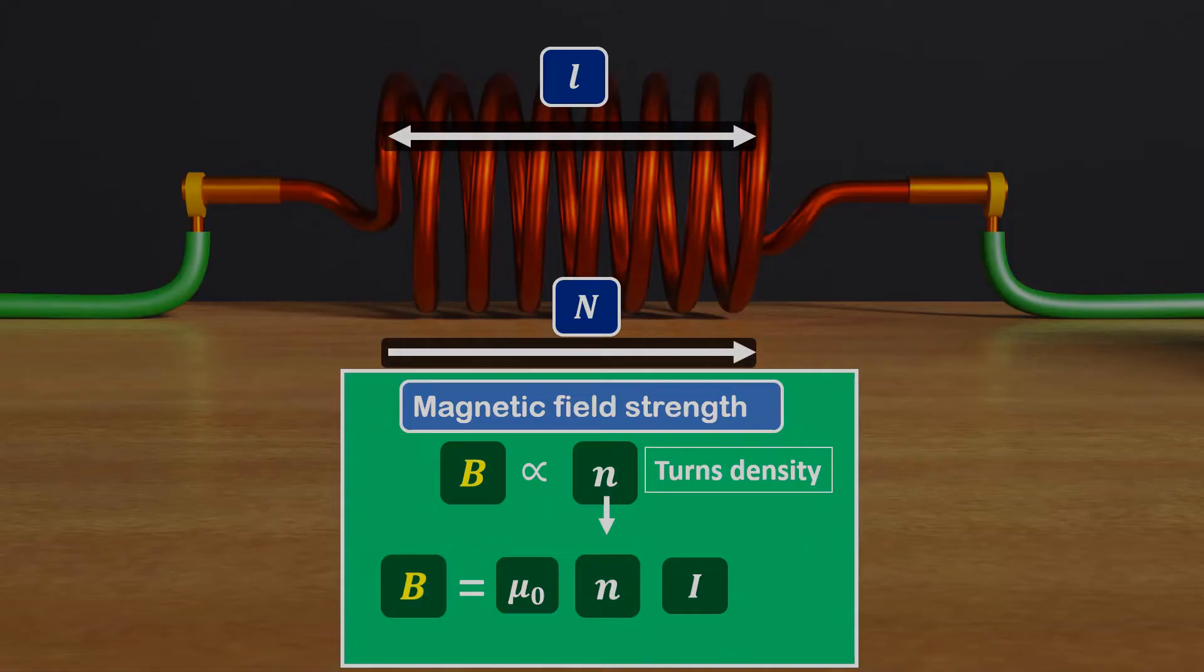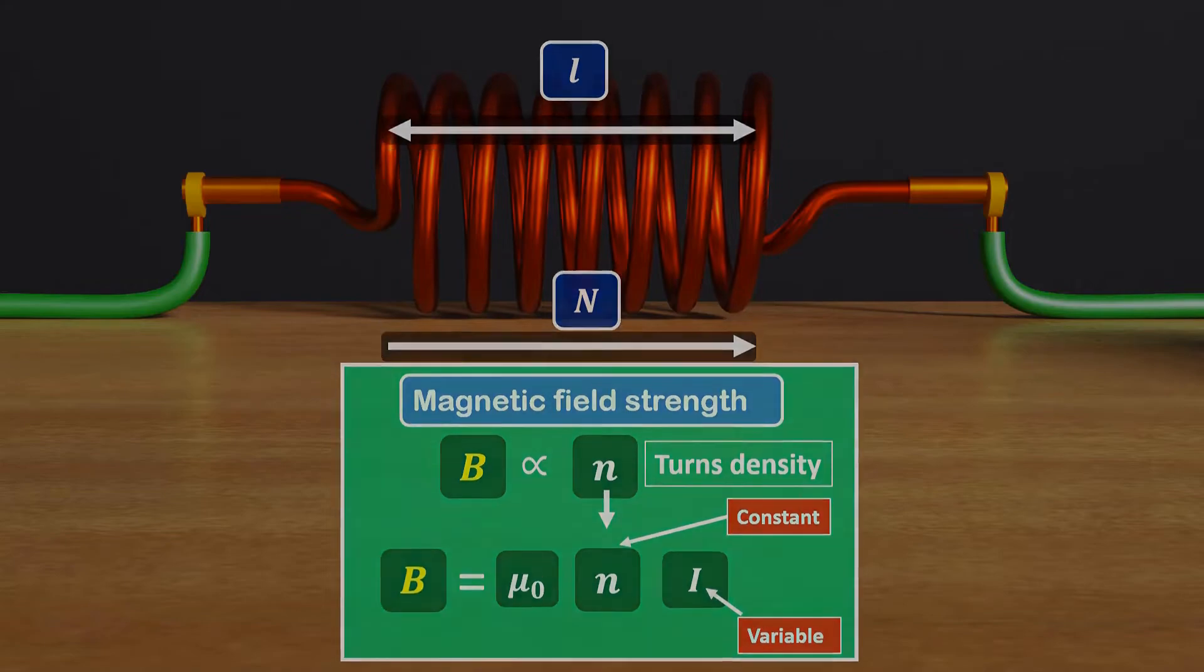Therefore, turns density N over L is also constant. The only variable is current I. Consequently, a coil's magnetic field strength B only depends on current I. Therefore, as the current varies, the magnetic field strength will also change.